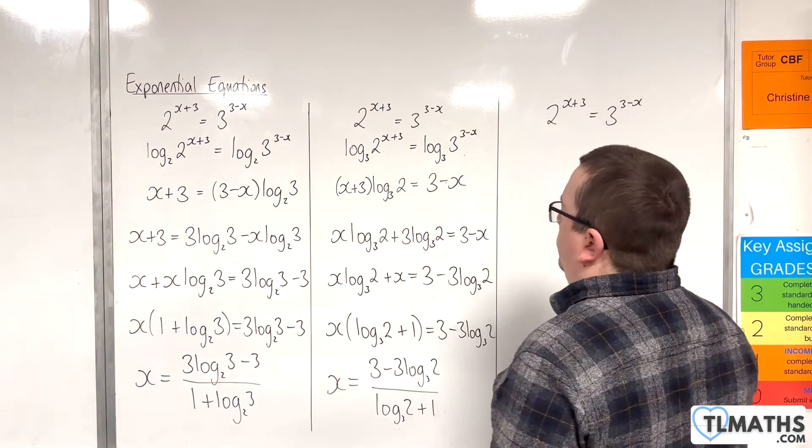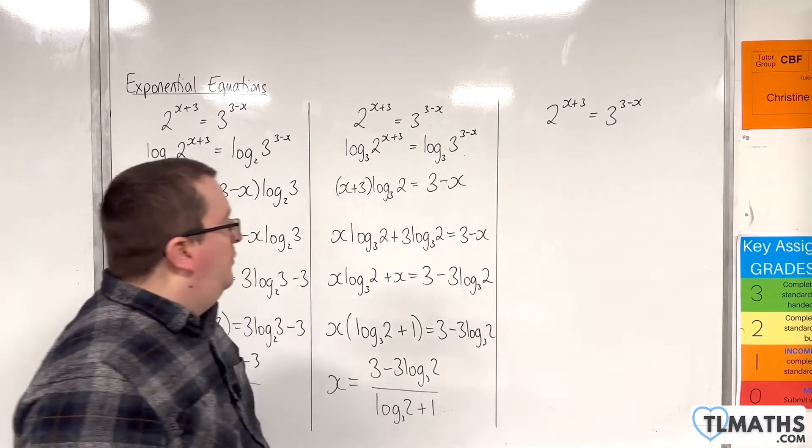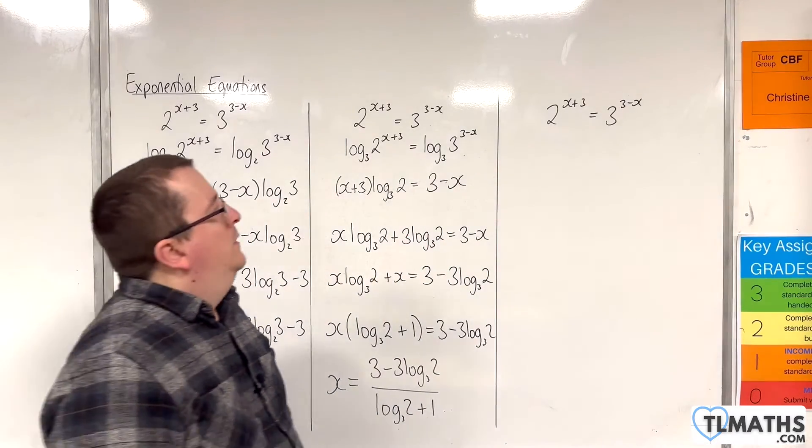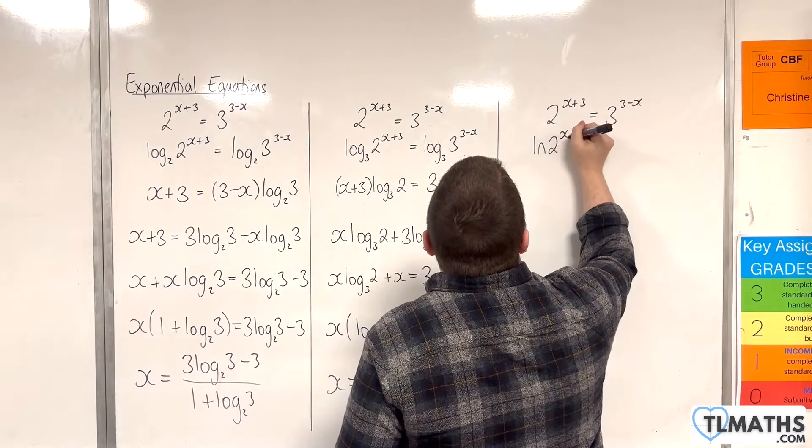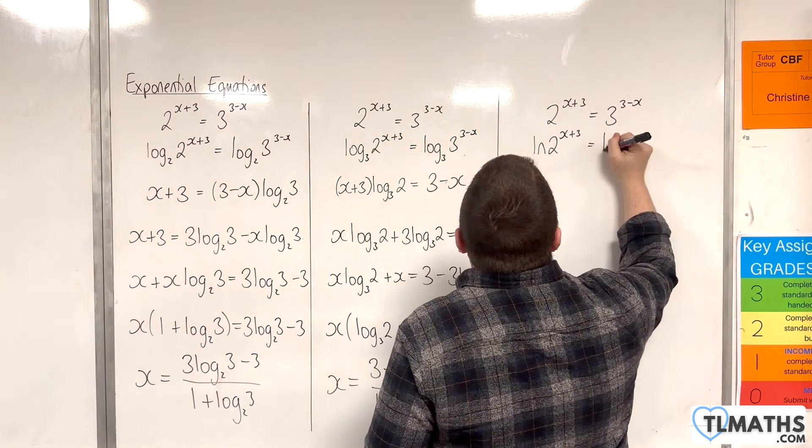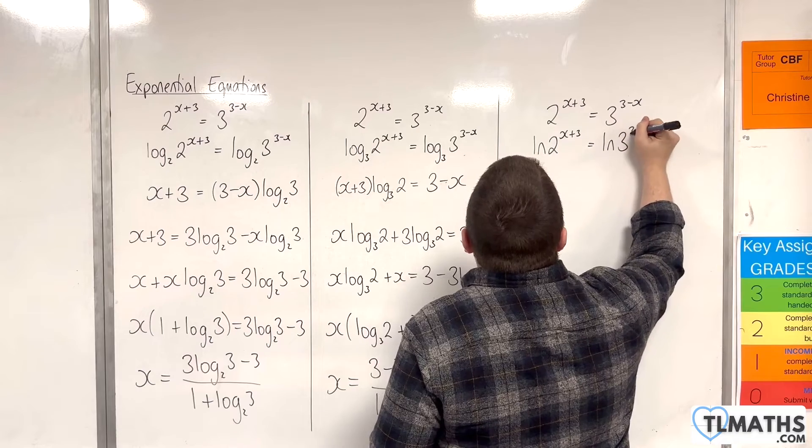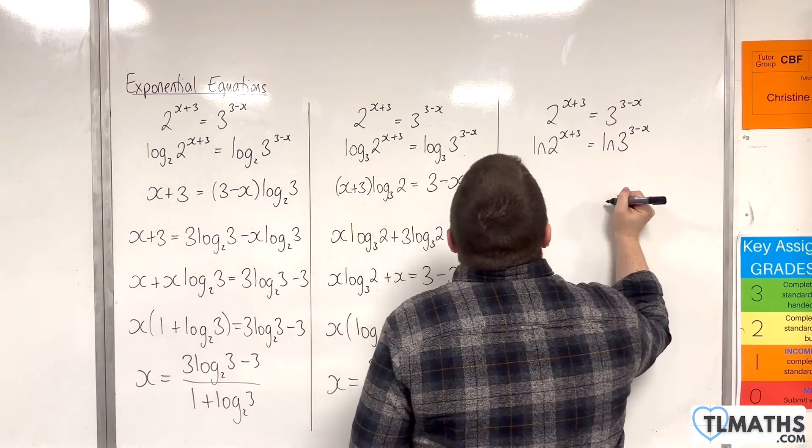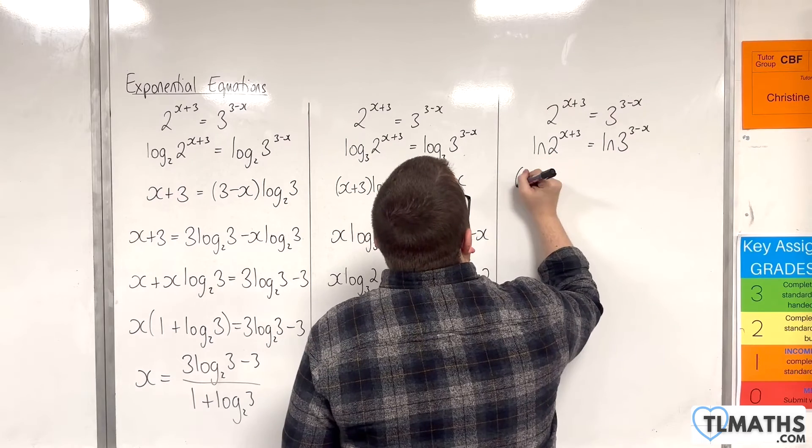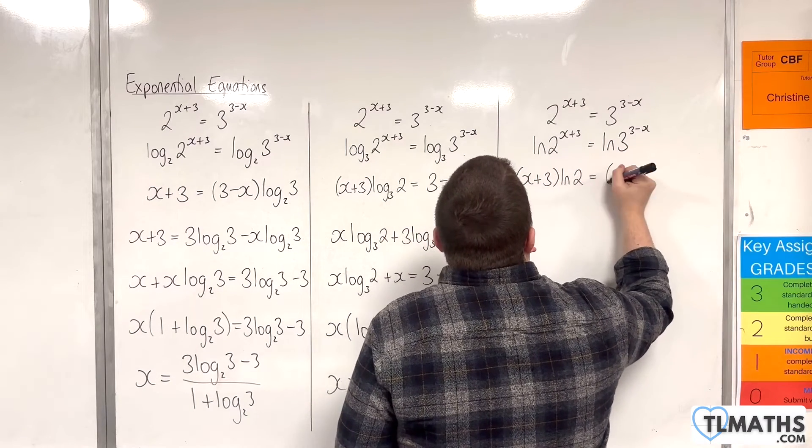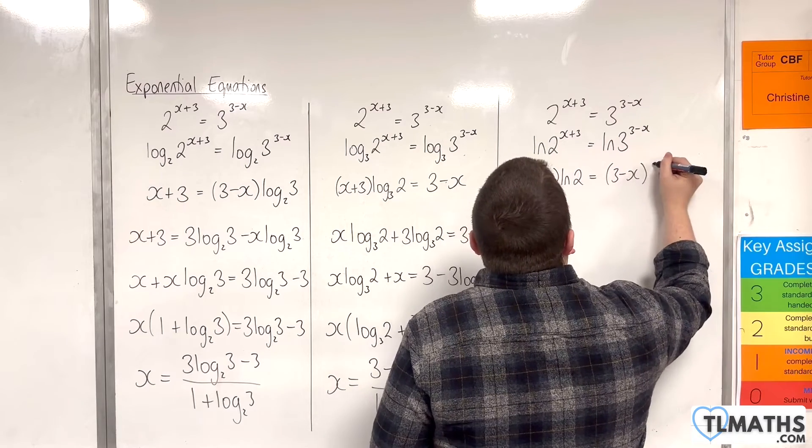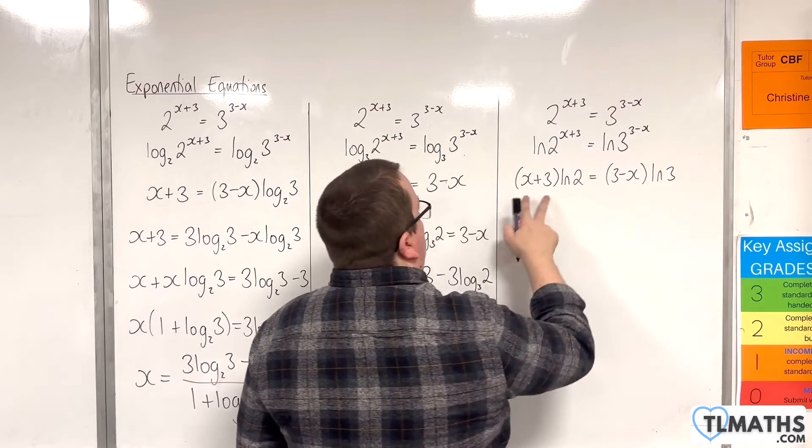Right, last one then. We're going to use the natural logarithm. So, natural log of 2 to the x plus 3 is the natural log of 3 to the 3 minus x. So, bring the powers down the front, use the power rule. x plus 3, natural log of 2 is 3 take away x, natural log of 3. Make sure we've got the brackets there.